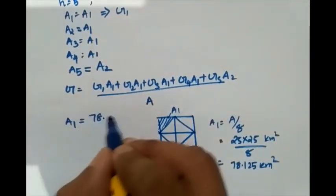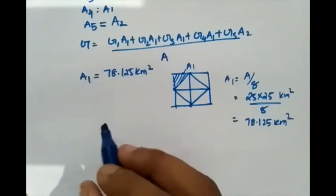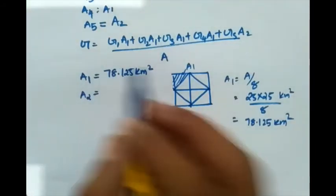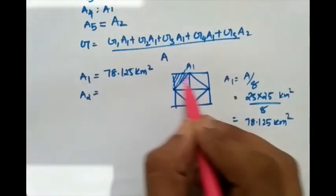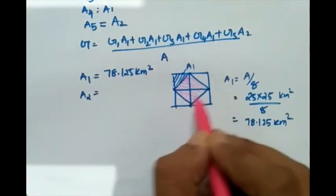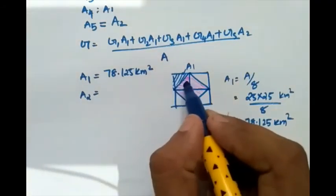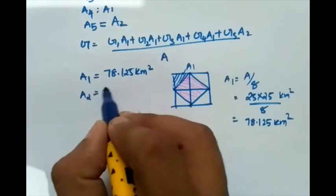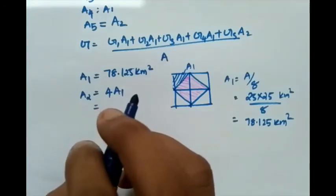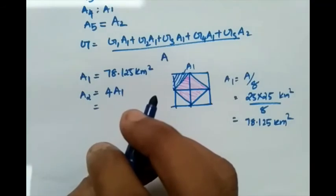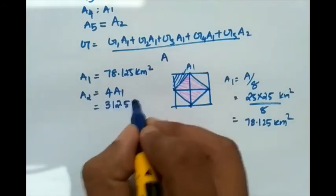Now A2 is the central area for G5. You can see that A2 = 4 × A1, because it covers four of those equal portions. So A2 = 4 × 78.125 = 312.5 km².